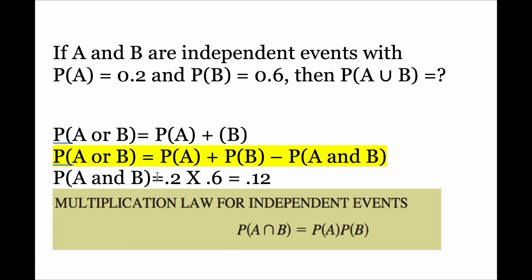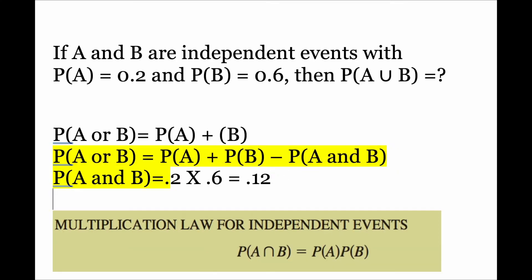Now since we have found probability of A and B occurring, we can find probability of A or B occurring using the second formula. Probability of A or B equals 0.2 plus 0.6 minus 0.12, so the answer is 0.68.